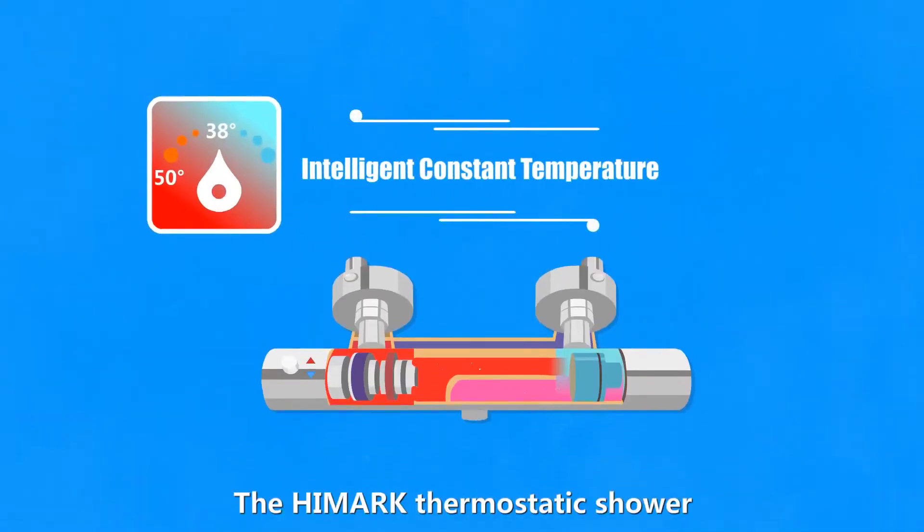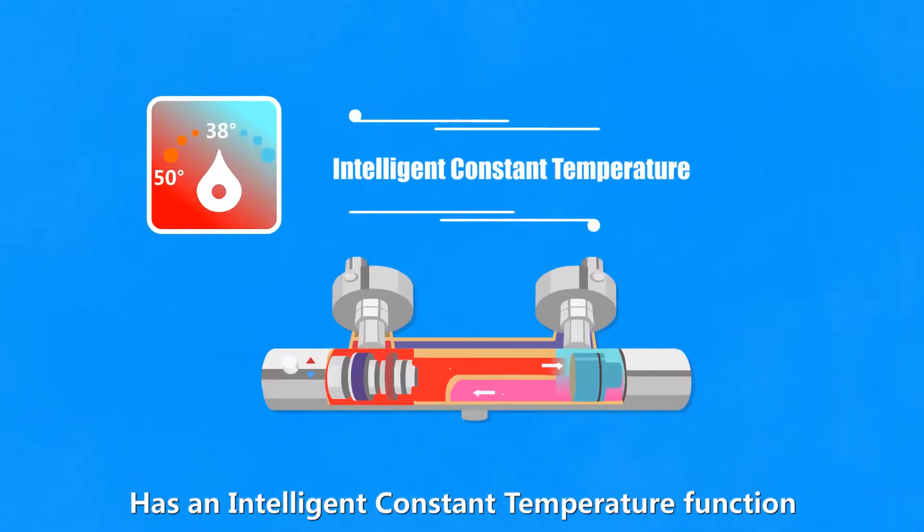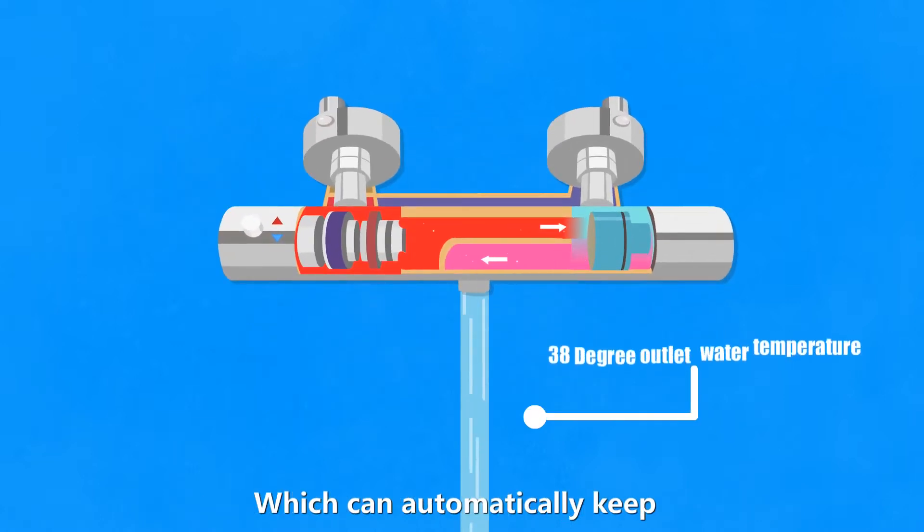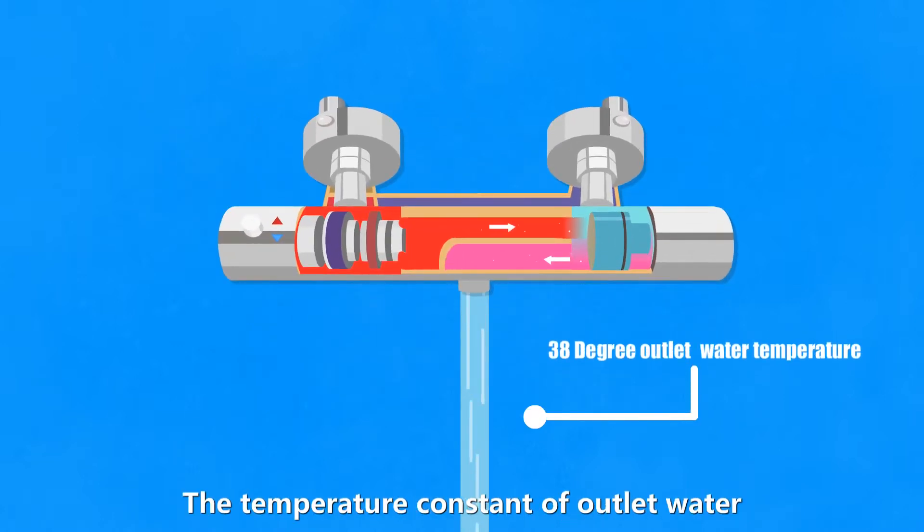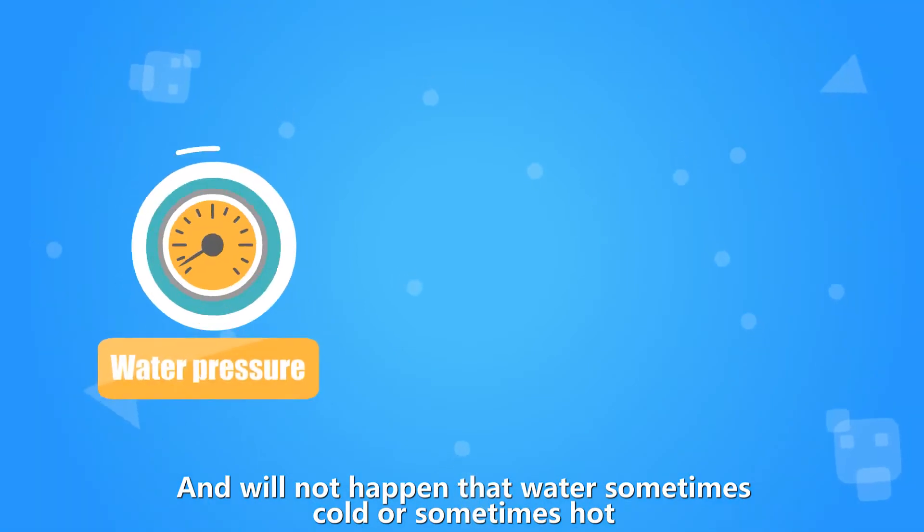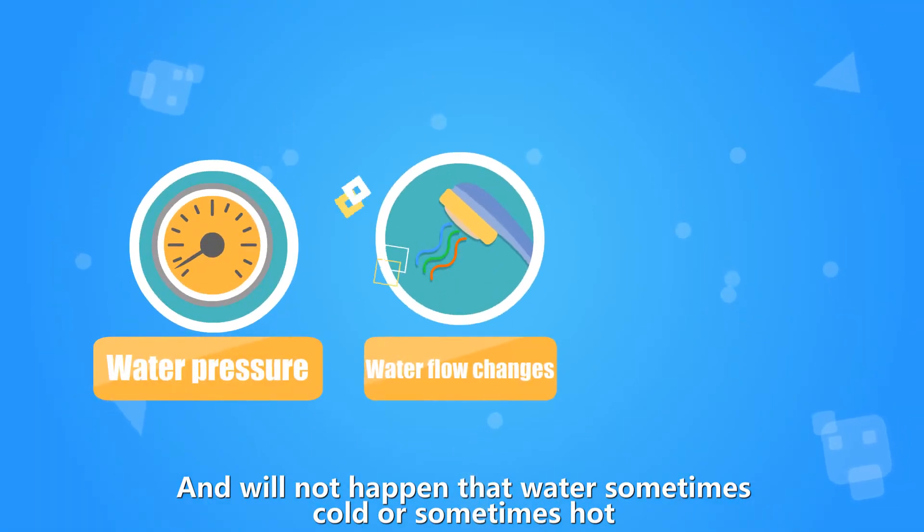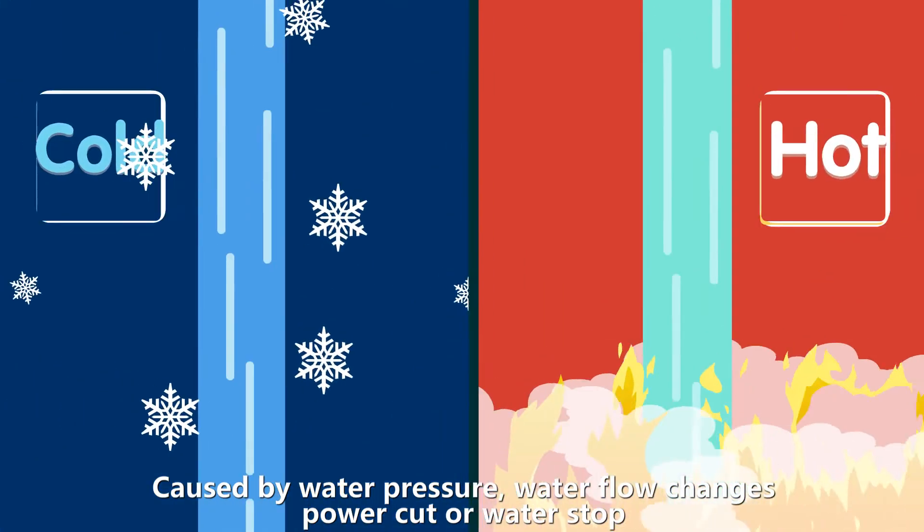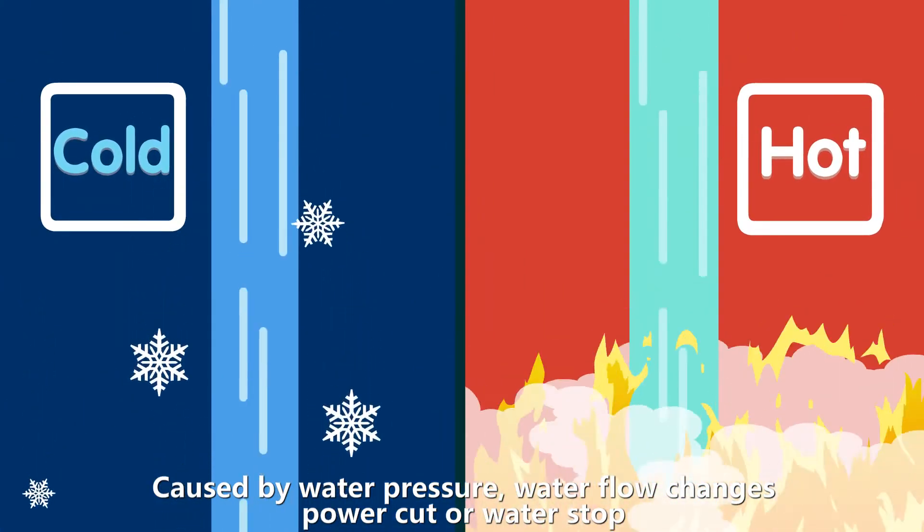First of all, the Highmark thermostatic shower has an intelligent constant temperature function which can automatically keep the outlet water temperature constant. Water won't be sometimes cold or sometimes hot caused by water pressure, water flow changes, power cut, or water stoppage.